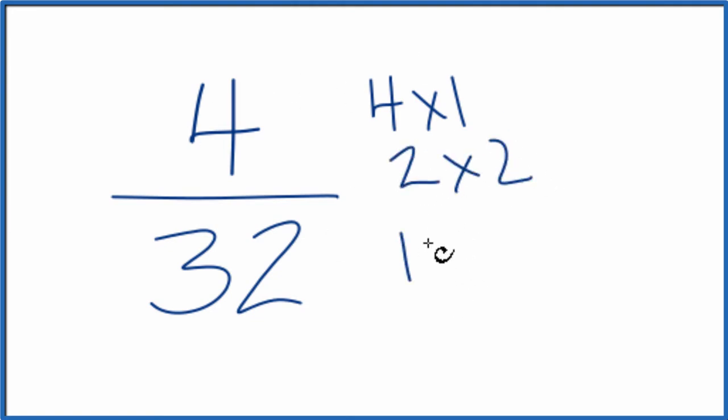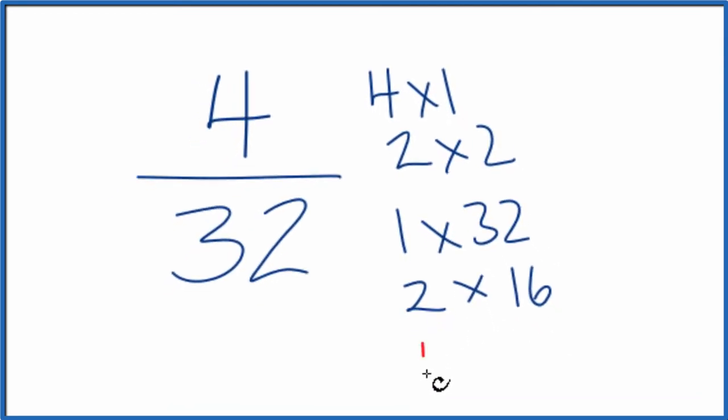For 32, we have 1 times 32, 2 times 16, 4 times 8, and I think that's it.